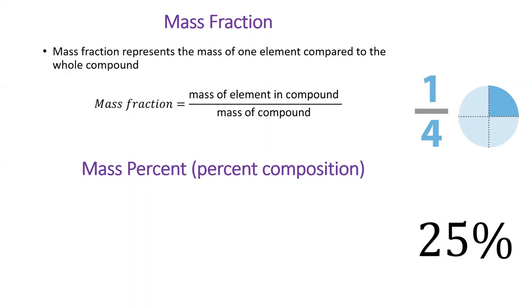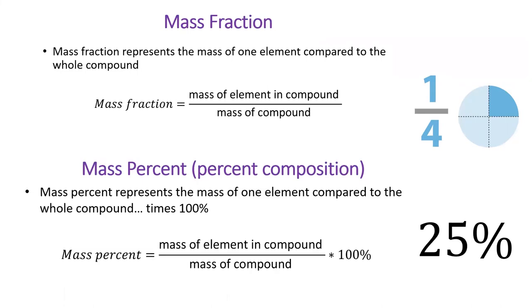Mass fraction is the mass of the specific element in a compound divided by the total mass of the compound. Mass percent is the mass of a specific element in a compound divided by the total mass of the compound times 100%.